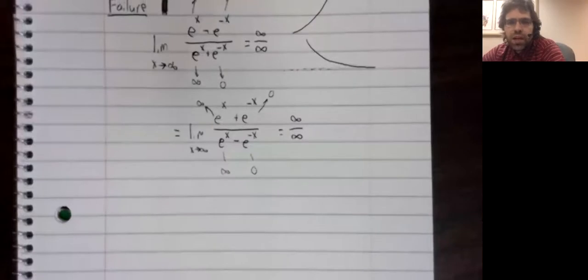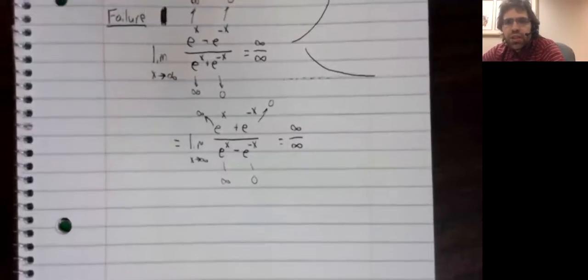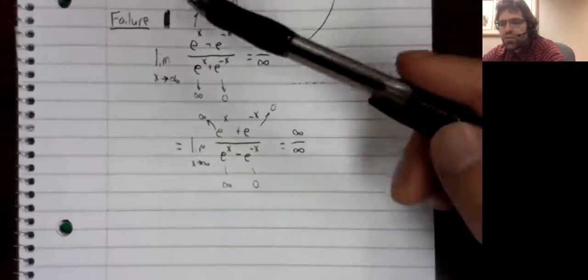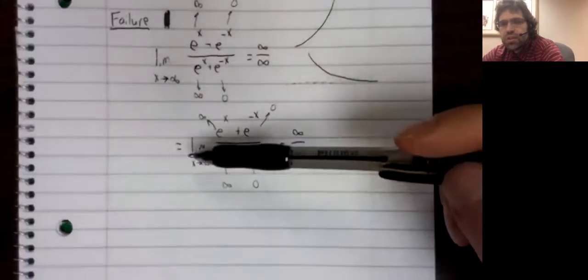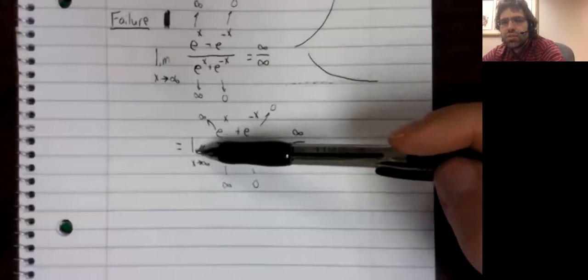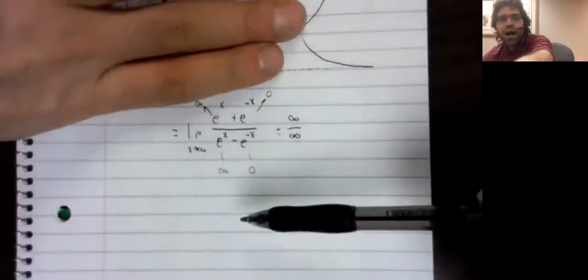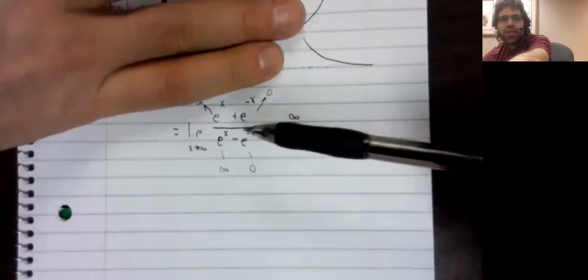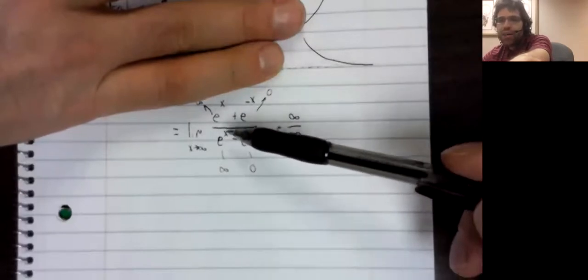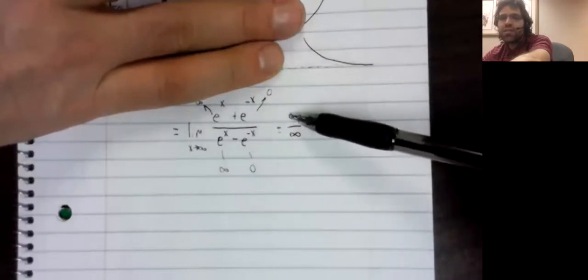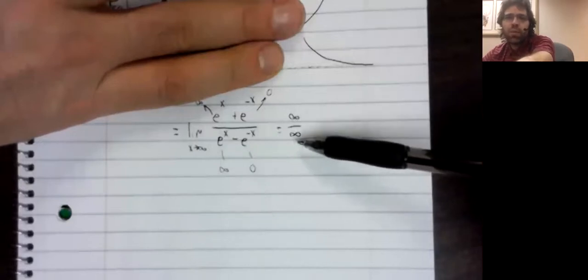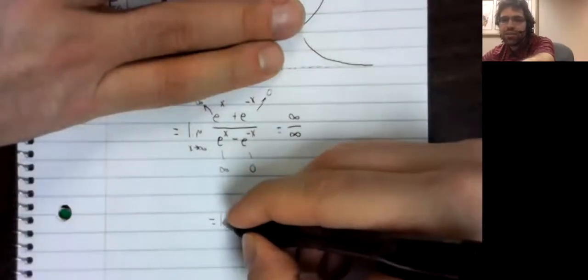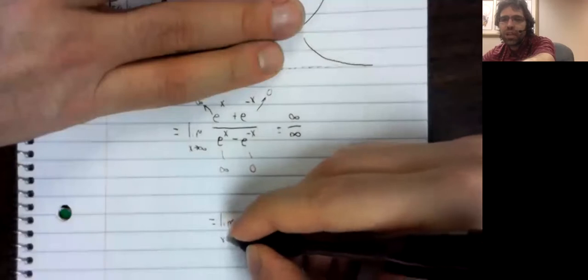Now, a trick that sometimes works is that you can use L'Hôpital's rule more than once. This limit equals this limit equals this limit. So if we can find what this limit is, we'll be done. We can't find what this limit is because it's of an indeterminate form, but we have a trick for finding limits of indeterminate form.